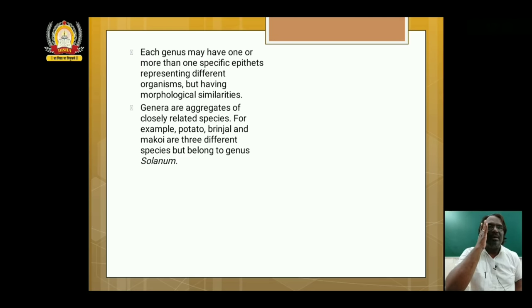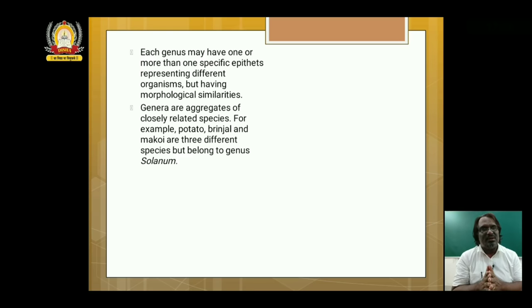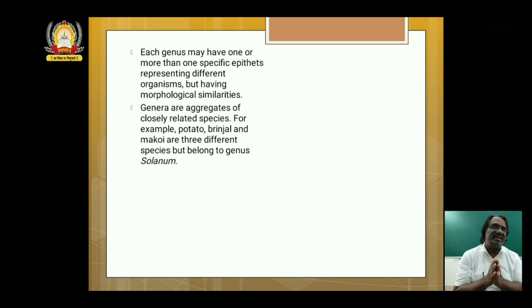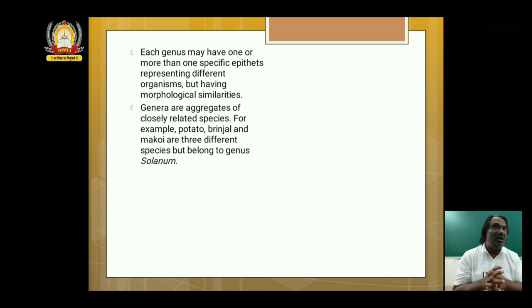Genera are aggregates of closely related species. What is a genus? Closely related but different species are there — they have the same genus but different species names. For example, potato, brinjal and makoy are three different species belonging to the same genus Solanum. See: a potato plant, a brinjal plant and makoy. All three are different species, but because they have some similar characters they come under genus Solanum.